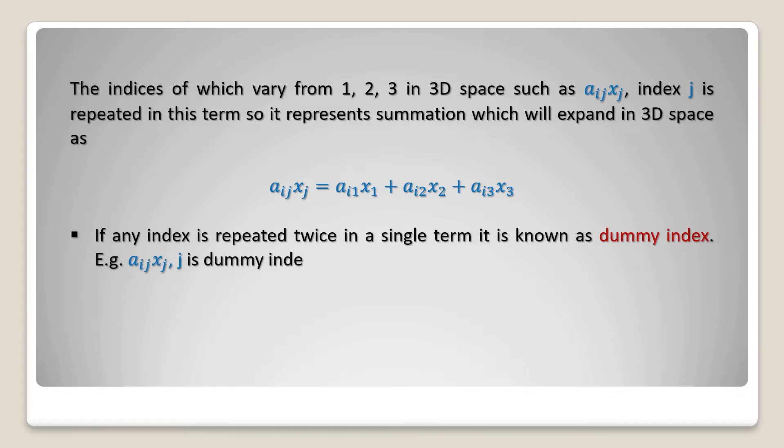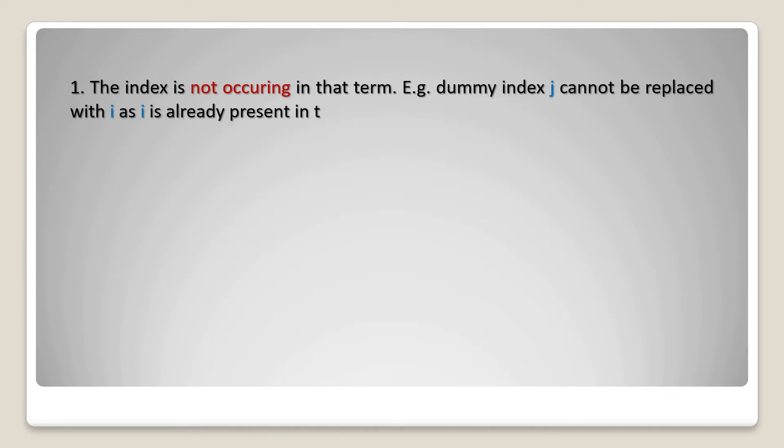If any index is repeated twice in a single term, it is known as a dummy index. For example, aij xj, where j is the dummy index. A dummy index can be replaced by any other index provided that the index is not already present in the term. For instance, aij xj may be equal to aik xk.